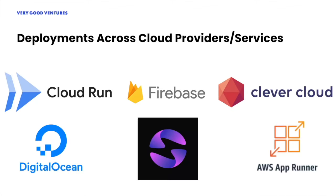One other area that we have seen grow, especially over the last year, has been the support for getting DartFrog up and running on different cloud platforms and service providers. At Very Good Ventures, a lot of our clients rely on Google Cloud and Firebase, but we have also seen deployments on AWS via their App Runner service, Digital Ocean, and Clever Cloud. We've also been working with the folks at Globe to ensure that DartFrog deployments work well in their service and are super simple, so you can focus on writing features instead of maintaining deployment scripts.